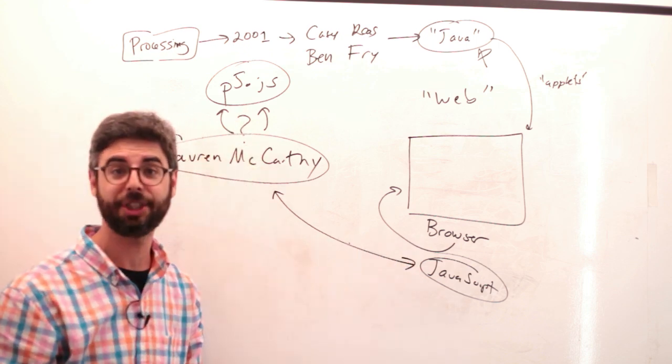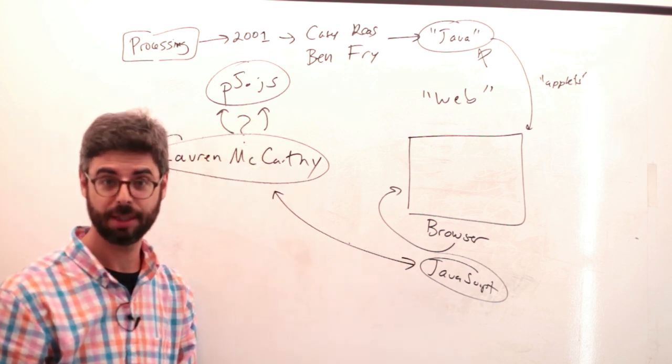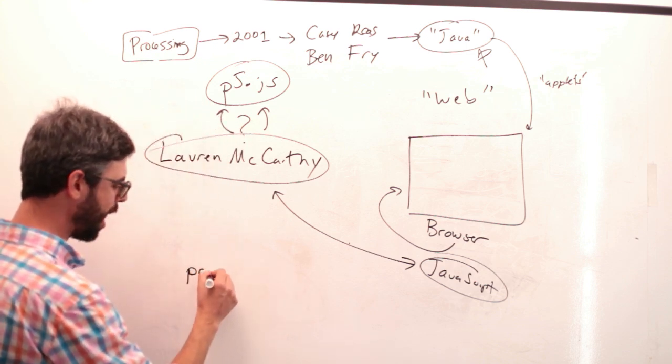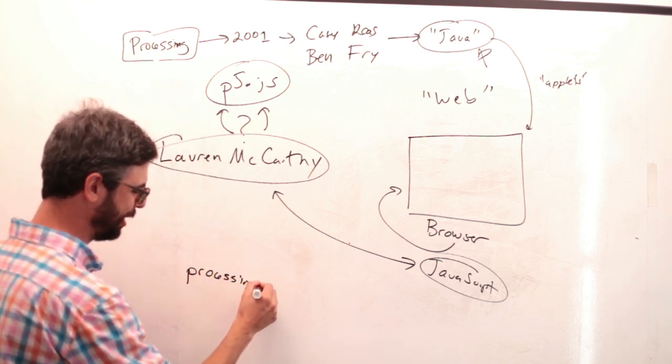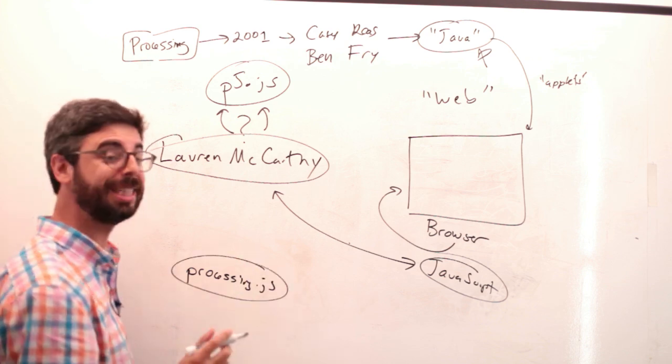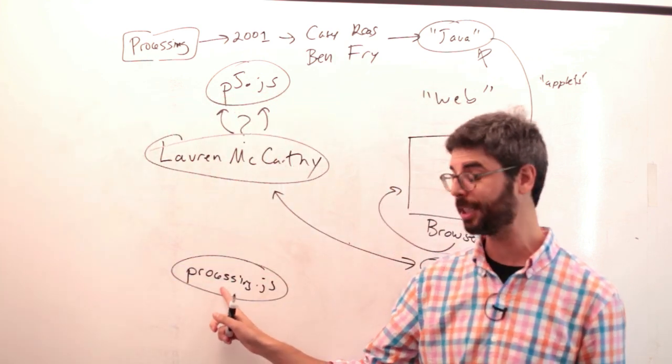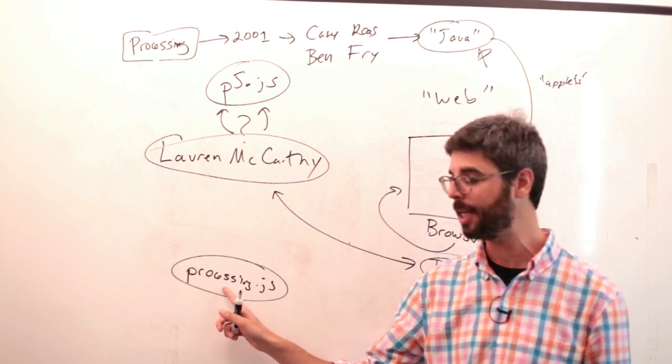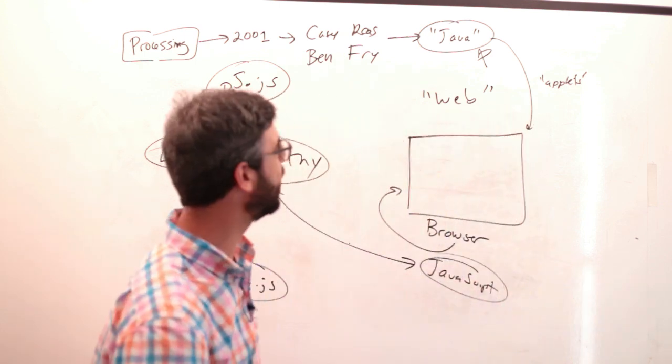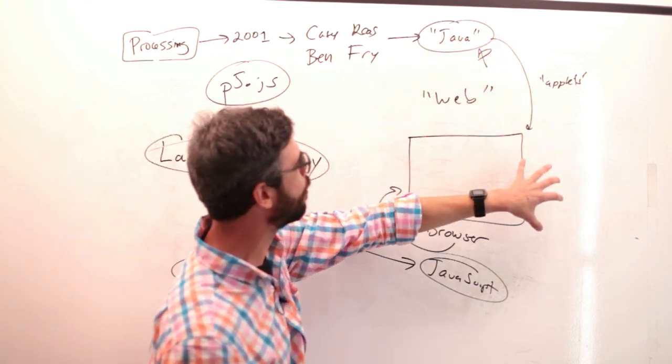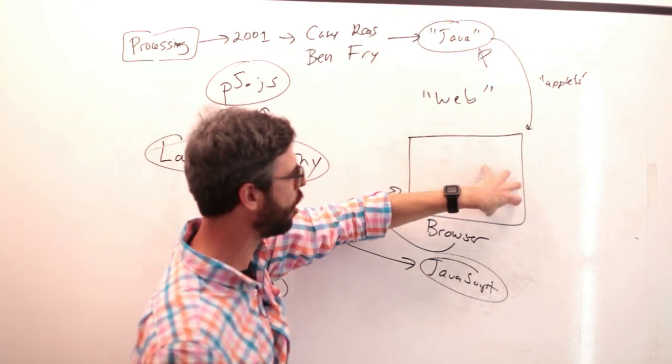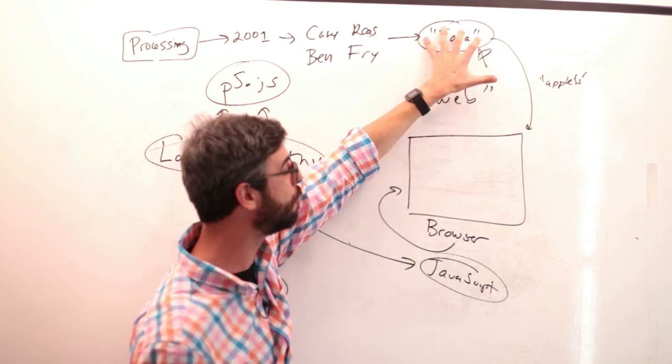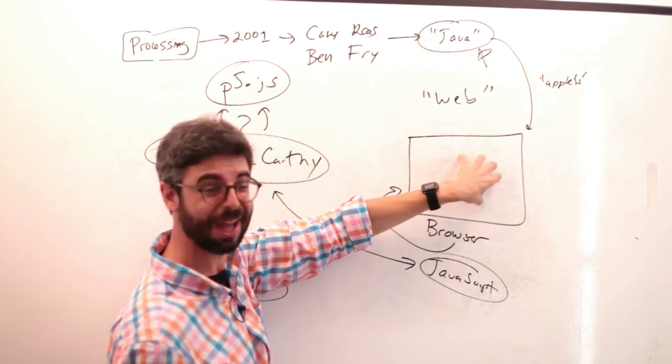So this is what p5.js is as a project. I should just briefly mention there's another wonderful project called Processing.js. I know this is crazily confusing, but Processing.js was a project started by John Resig. Processing.js sort of tries to solve this other problem - your Java code can't run on the web as an applet anymore. What if we could behind the scenes translate it to JavaScript so that it ran there?